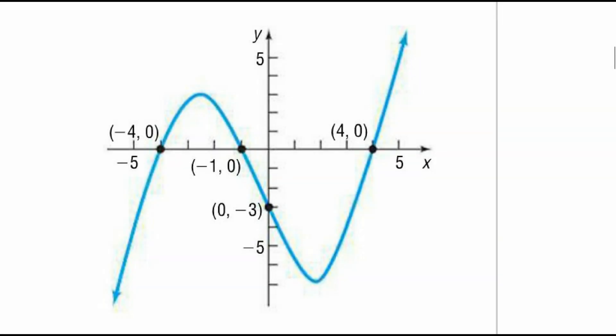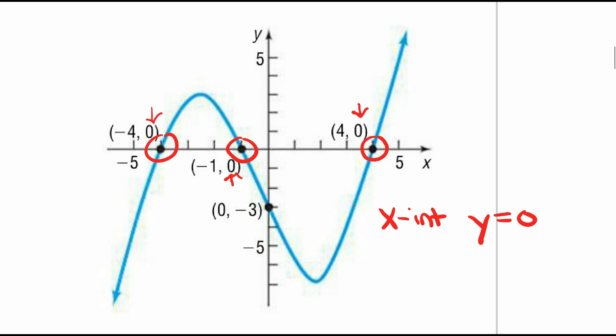Today we're going to talk about intercepts and symmetry. I want to show you a picture of a graph to understand the definition of intercepts — there are two types: x-intercept and y-intercept. The x-intercept is where the blue graph crosses the x-axis, and there are three places where that happens. For each one of these points, the y value is always equal to zero — that is always true for an x-intercept.